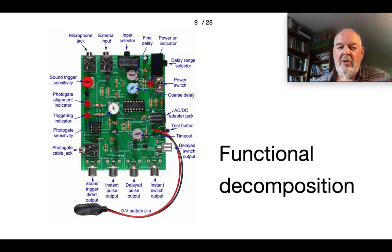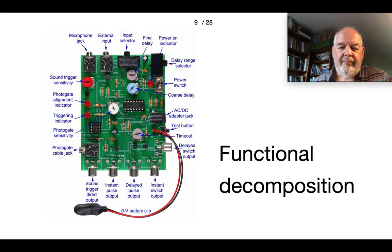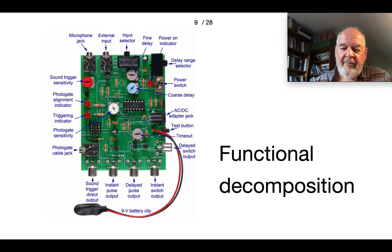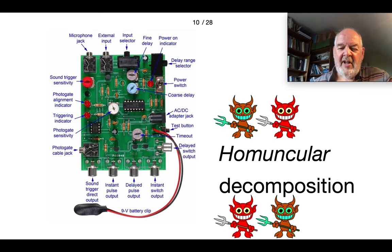When you try to understand how a complex system works — the brain, or a printed circuit board — divide and conquer through functional decomposition is the standard technique. Carve it up into different modules doing particular jobs, particular functions, and see how they fit together. This is also described as homuncular decomposition, where you think of the different modules as homunculi — little imps or agents — each with a job to do, each with things that matter to them, communicating with each other.